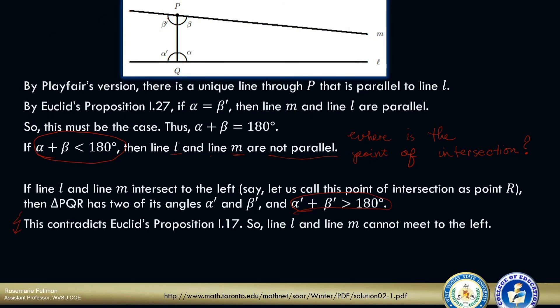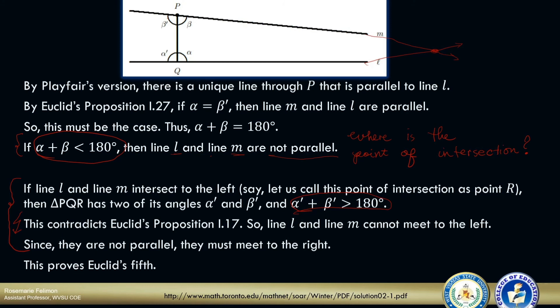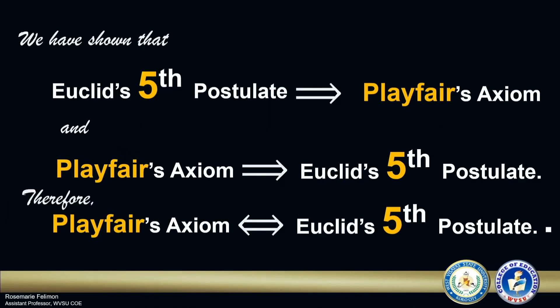Since the lines are not parallel, then they must meet to the right. This is where the sum of the two angles — alpha plus beta — is less than two right angles. Clearly, this proves Euclid's fifth postulate. Remember that in this proof, we first showed that the lines are not parallel, and then we showed that the intersection must be on the side where the two angles are less than two right angles. We have shown that Euclid's fifth postulate implies Playfair's Axiom, and Playfair's Axiom implies Euclid's fifth postulate. Therefore, Playfair's Axiom is equivalent to Euclid's fifth postulate. And we are done with the proof.